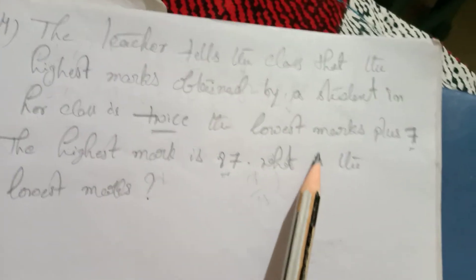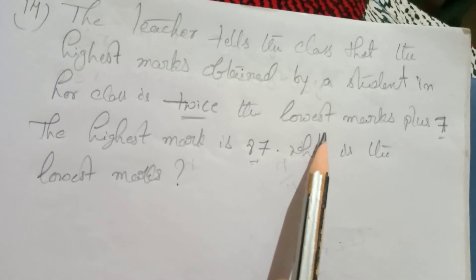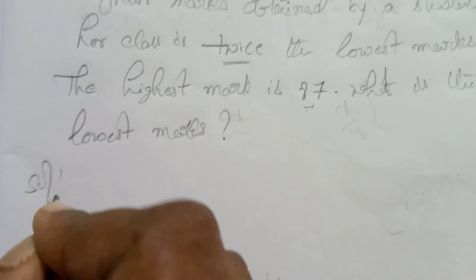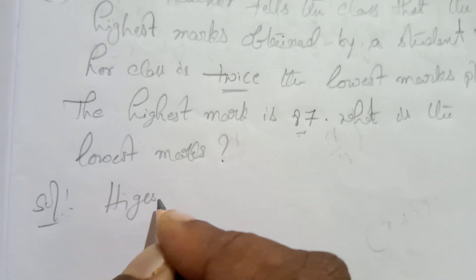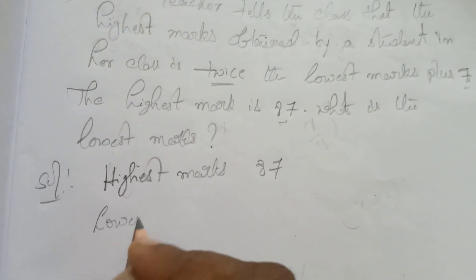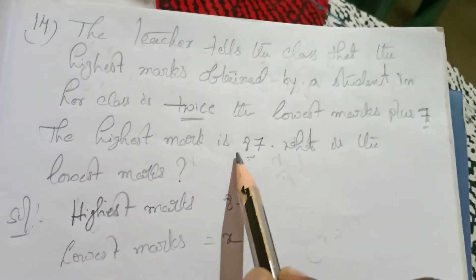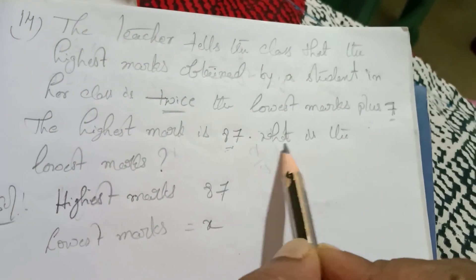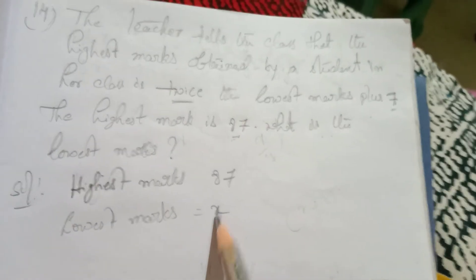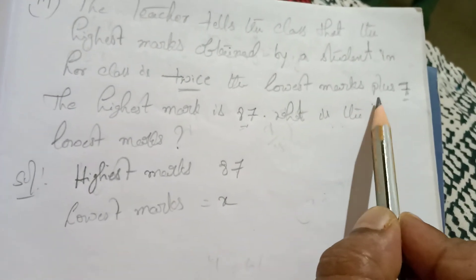We need to find the lowest marks. Let the lowest marks be x. The highest marks is 87.